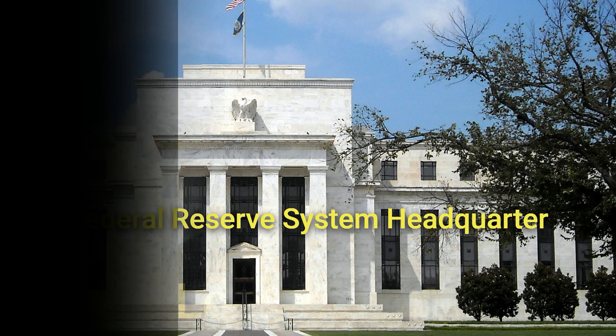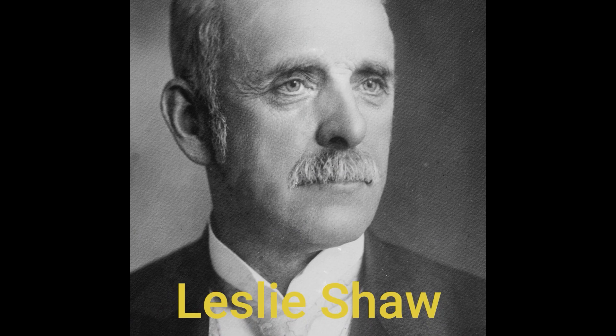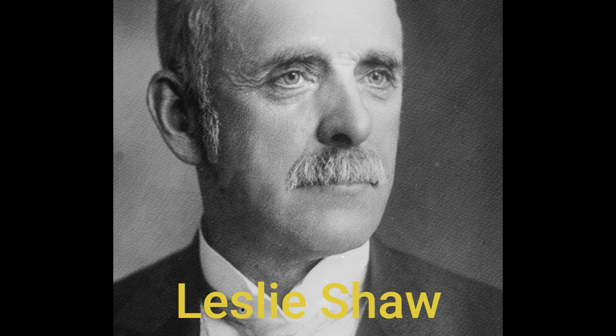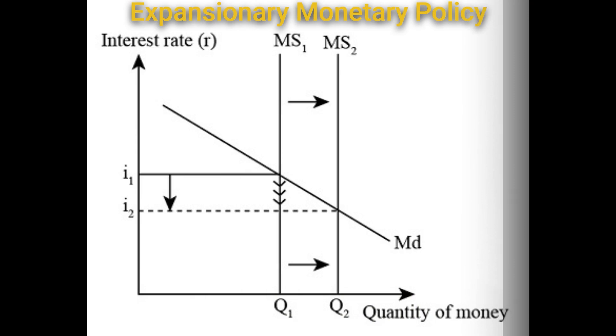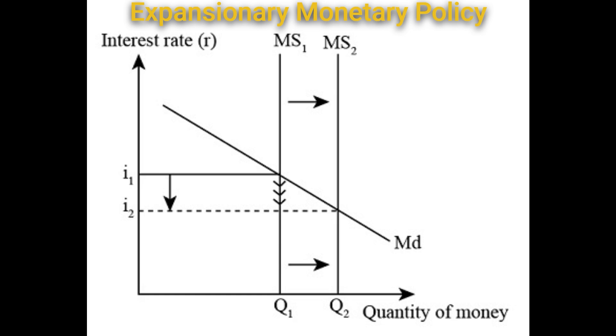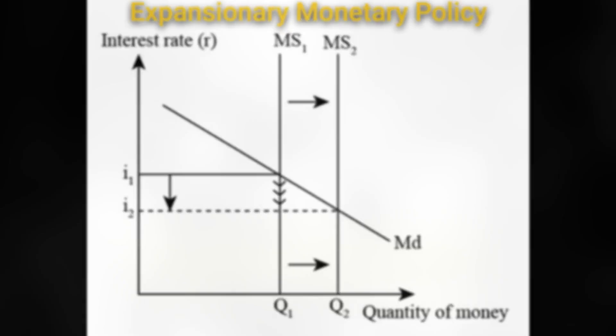The Bank Panic of 1907 occurred during a six-week stretch starting in October 1907. In the years leading up to the panic, the U.S. Treasury, led by Secretary Leslie Shaw, engaged in large-scale purchases of government bonds and eliminated requirements that banks hold reserves against their government deposits. This fueled the expansion of the supply of money and credit throughout the country and an increase in stock market speculation, which would eventually precipitate the panic of 1907.